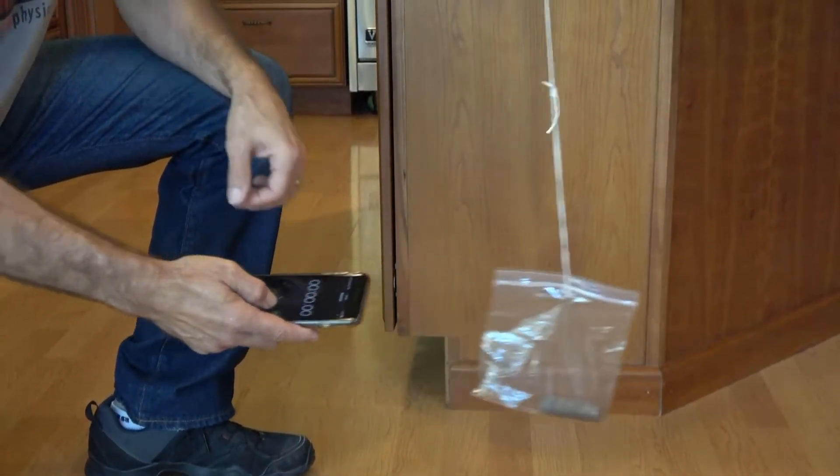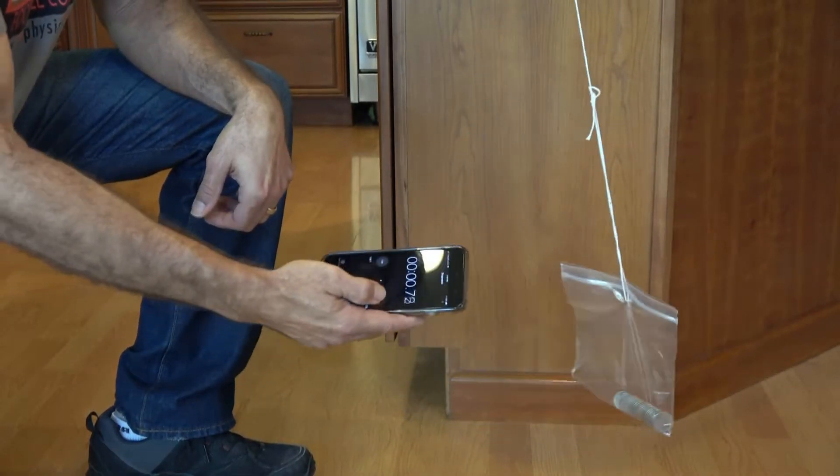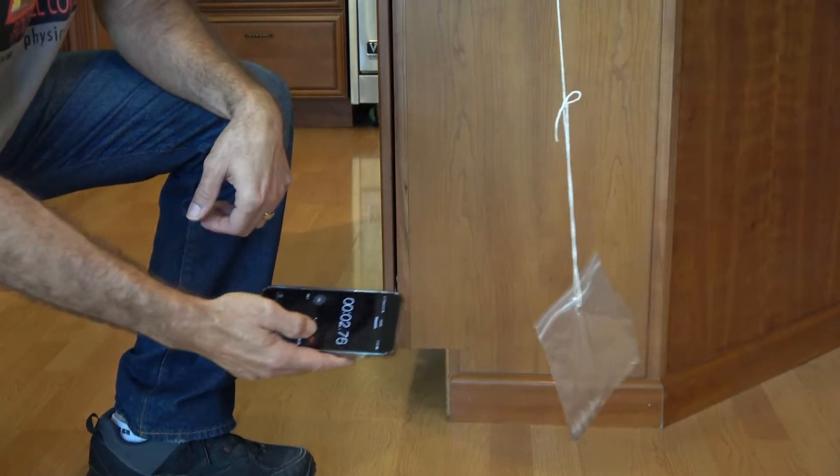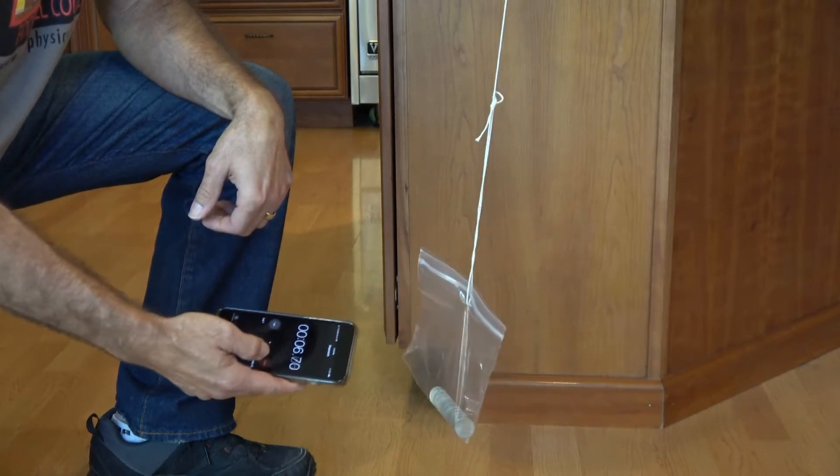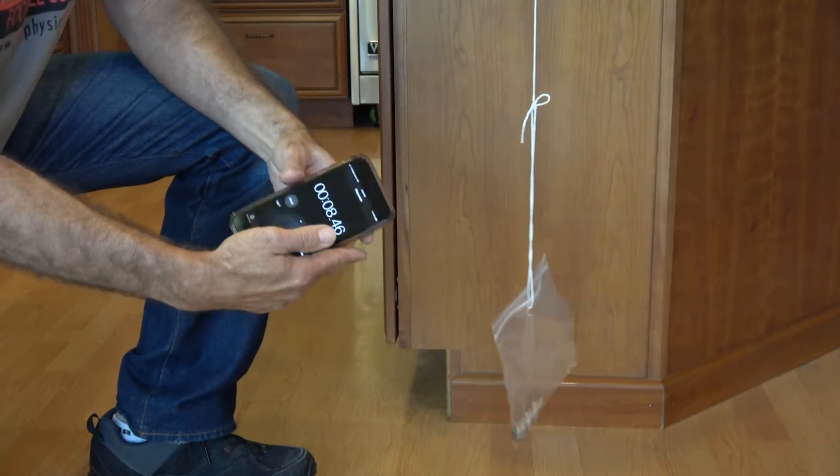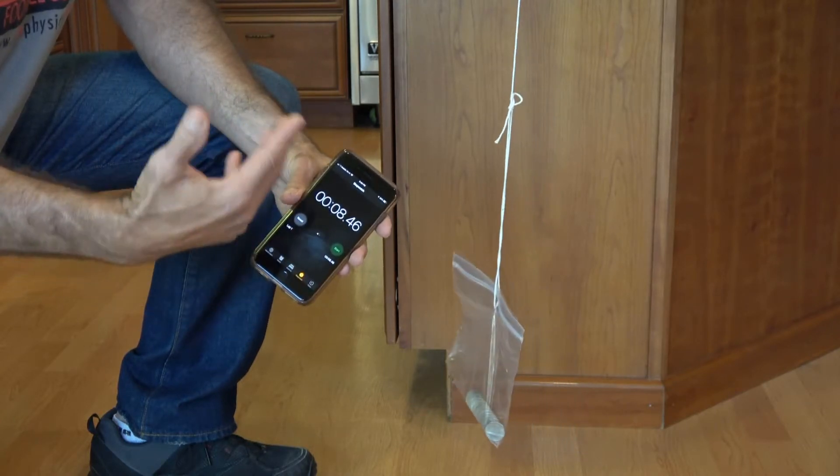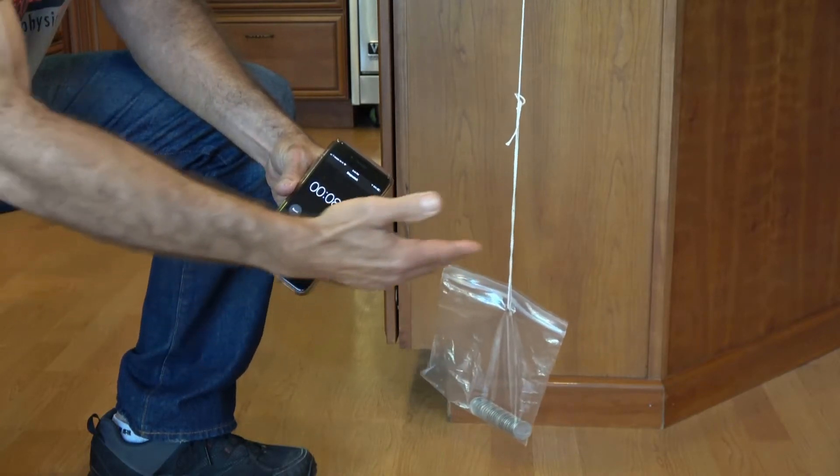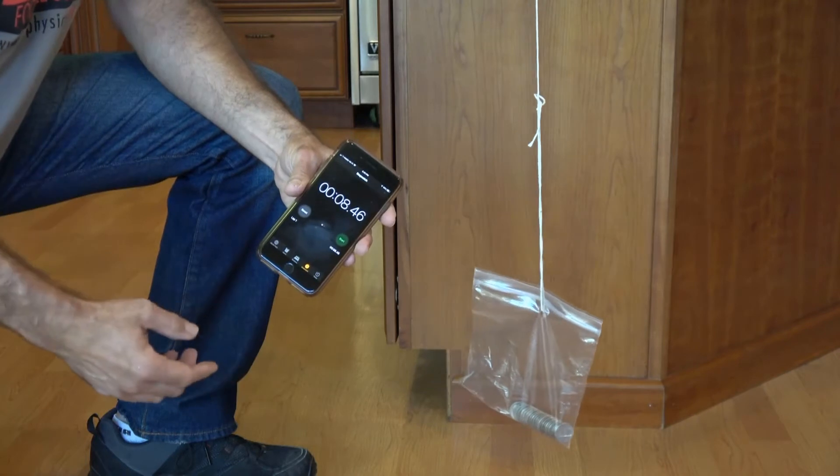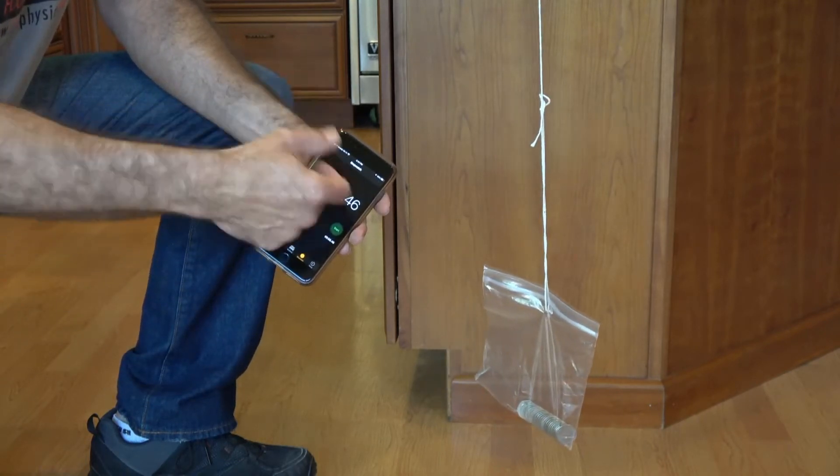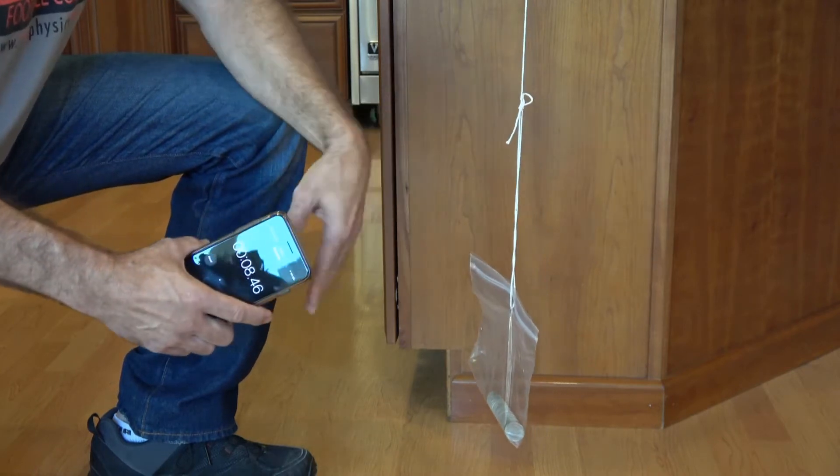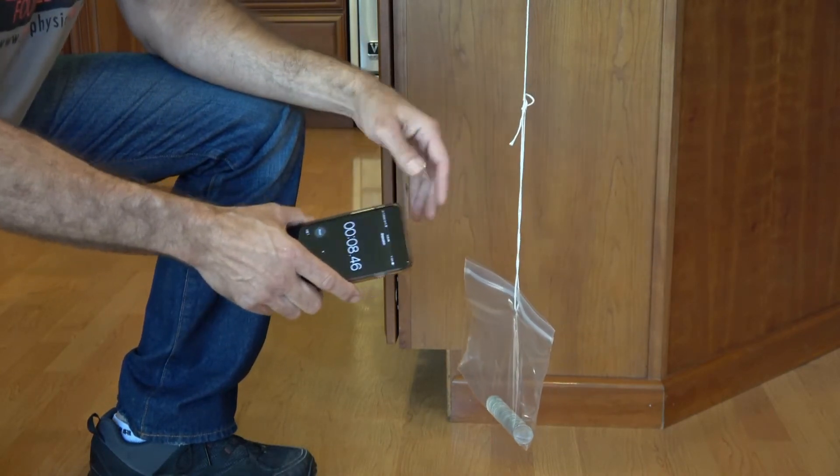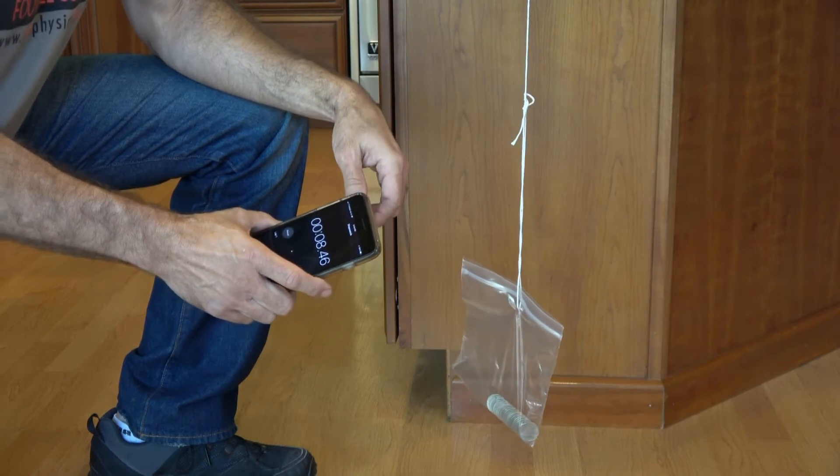I'm going to measure one, two, three, four, five cycles, and then I'll take this number and divide it by five to get the time for one cycle. That way any reaction time error is greatly reduced, as long as my amplitude isn't changing very much over that time.